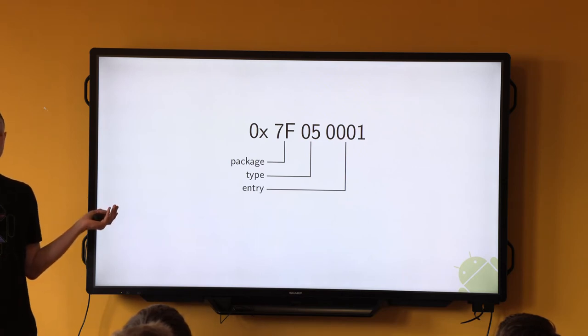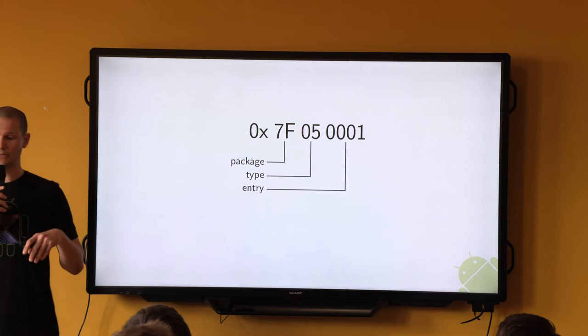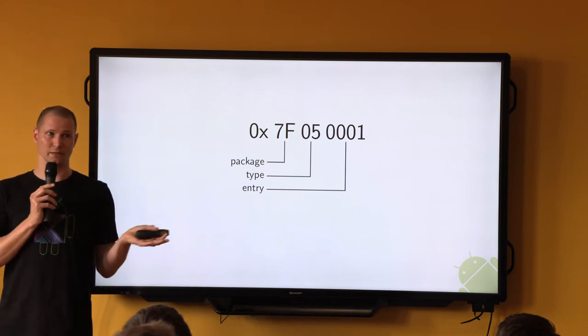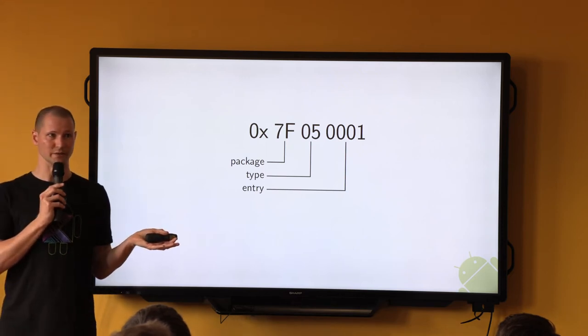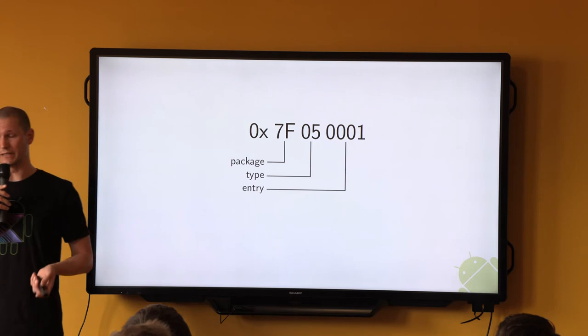Reading this example from right to left, we're looking at the second resource of type 5 — whatever type 5 is — in a regular application package.